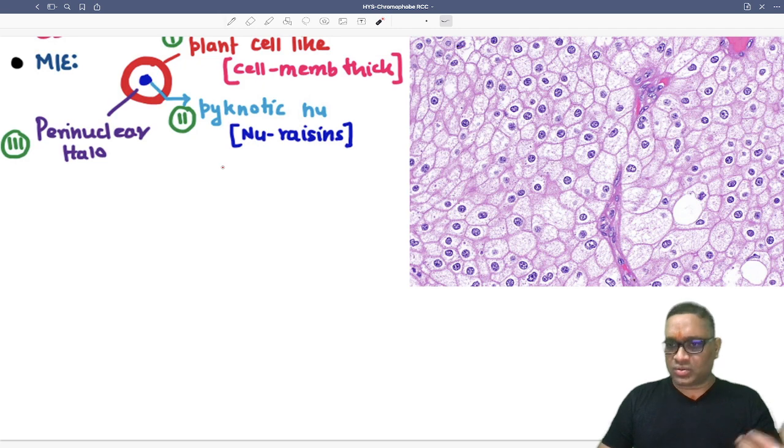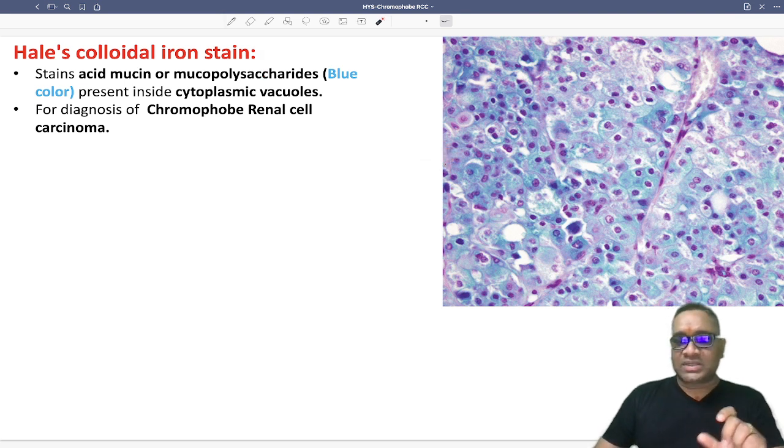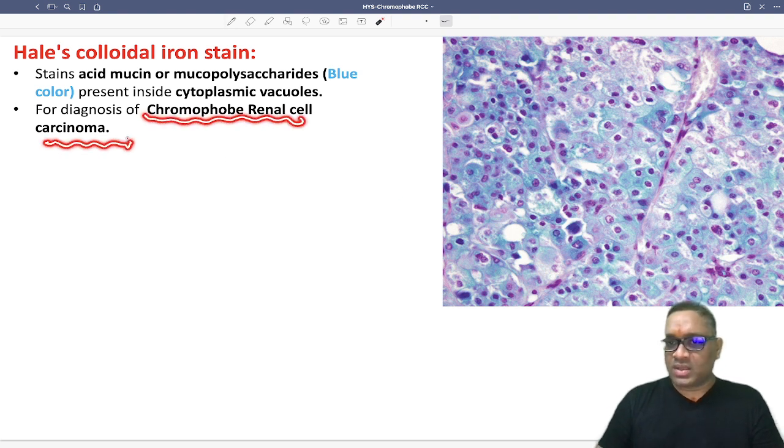So these are characteristic or diagnostic of chromophobe renal cell carcinoma. Hale's colloidal iron stain is a special stain where you can see that this chromophobe RCC has been stained, which will be used for the acid mucin or mucopolysaccharides. They will turn out to be blue color. All these blue color structures are acid mucopolysaccharides, and this will confirm the diagnosis of chromophobe renal cell carcinoma. So enjoy learning.